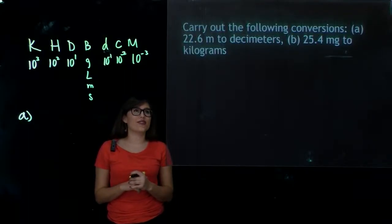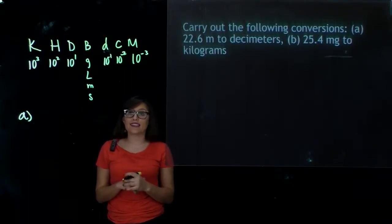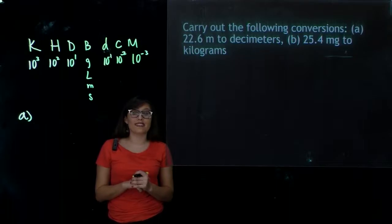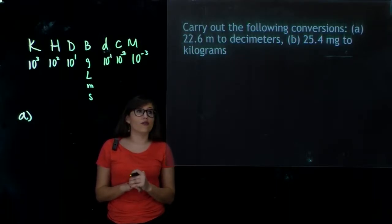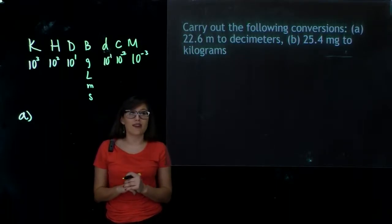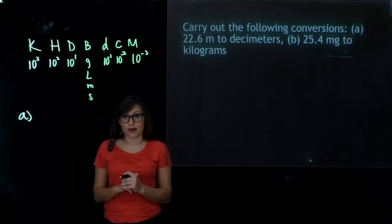The following problem states: carry out the following conversions. Part A, convert 22.6 meters to decimeters. And Part B, we're going from 25.4 milligrams to kilograms.